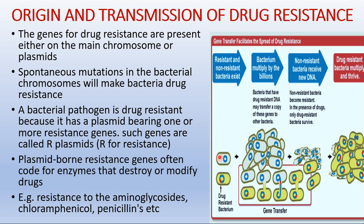One bacterium is a resistant bacterium possessing a resistance plasmid, and the other is a non-resistant bacterium. During multiplication, the resistance genes on the plasmids are readily transferred to other cells quite rapidly through normal gene exchange processes such as conjugation, transformation, transduction, and transposition. Because a single plasmid may carry genes for resistance to several drugs, a pathogen population can become resistant to several drugs simultaneously. Non-resistant bacteria die, but resistant bacteria survive, multiply, and thrive in the presence of the antibiotics.